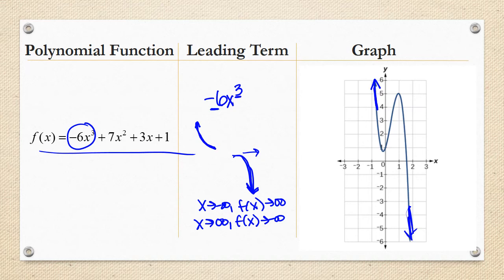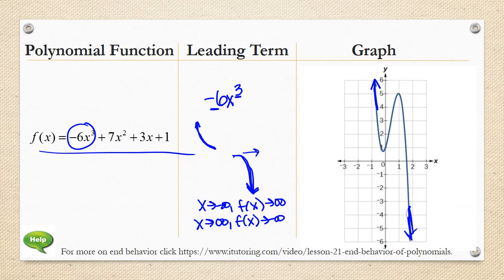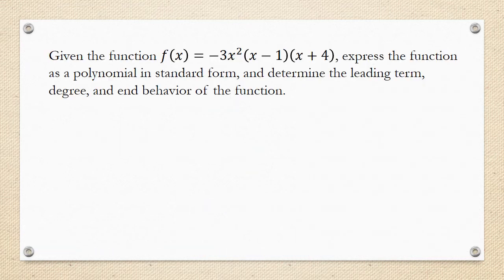This really helps us to be able to sketch the graphs of these polynomials. For more on end behavior, click this link right here. Now let's put this all together. Given the function f of x equals negative 3x squared times the quantity x minus 1 times the quantity x plus 4, express the function as a polynomial in standard form, and determine the leading term, degree, and end behavior of the function.